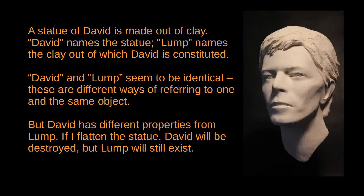But the puzzle is that David actually has different properties from Lump. Suppose I flatten the statue — in that case, David no longer exists, the statue of David has been destroyed. And yet the Lump of Clay that constituted the statue continues to exist — all the same stuff is still there, all the same matter. The Lump of Clay can survive being flattened; the statue cannot. So we have the following claims: David exists and Lump exists; David is identical to Lump; David has different properties from Lump. But if David has different properties from Lump, then David can't be identical to Lump.